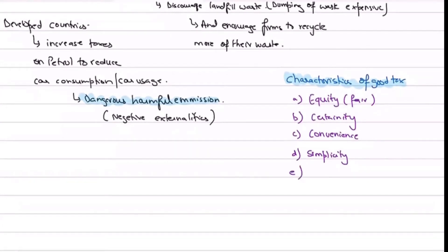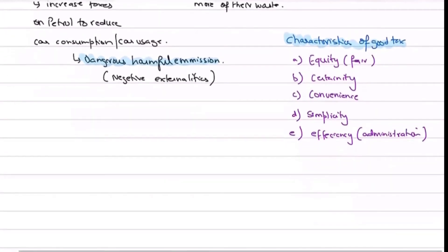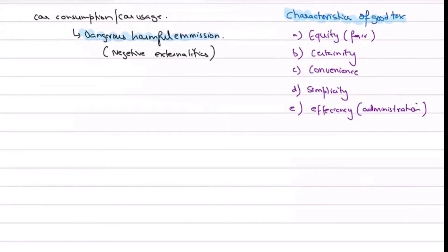Number two, there should be efficiency — efficiency in terms of administration. This means taxes should be easy to collect. The government shouldn't find it a hassle to collect taxes from people and firms; it should be easy to collect.